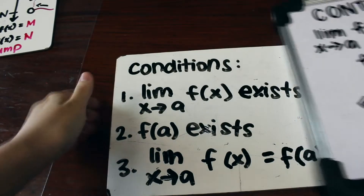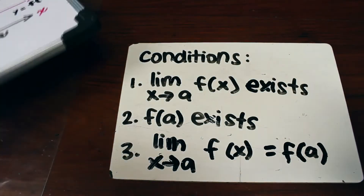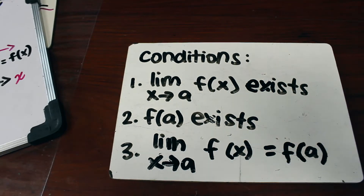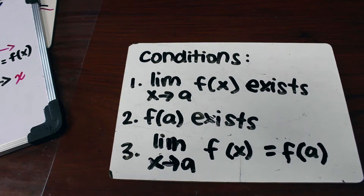First, the limit of f of x as x approaches a must exist. Second, f of a must exist. And third, the limit of f of x as x approaches a must be equal to f of a.